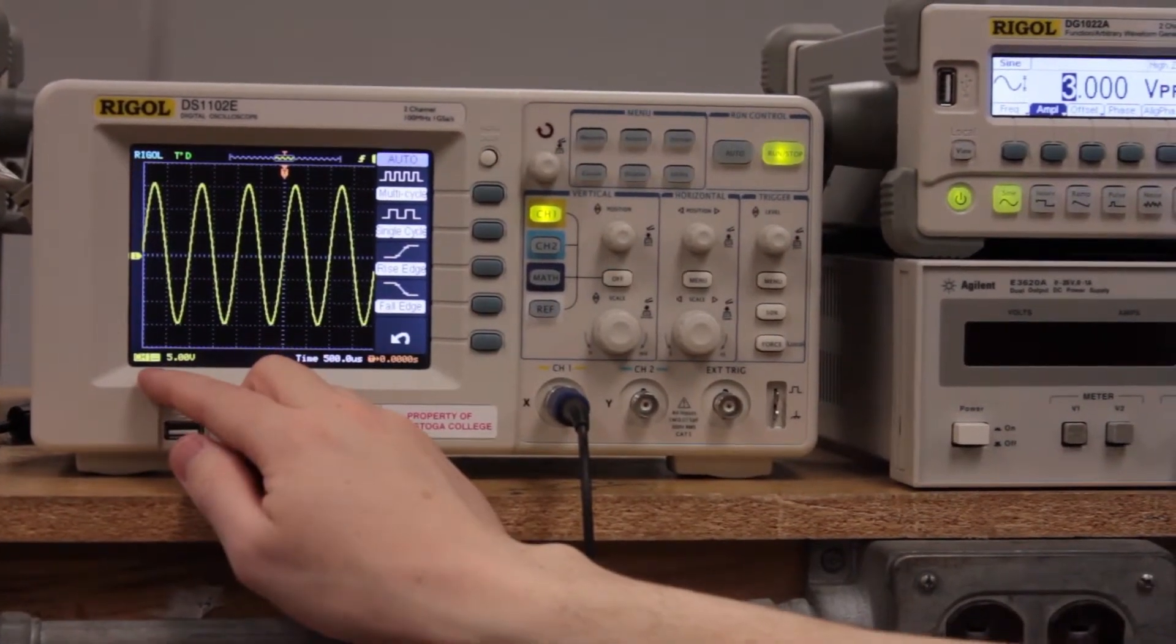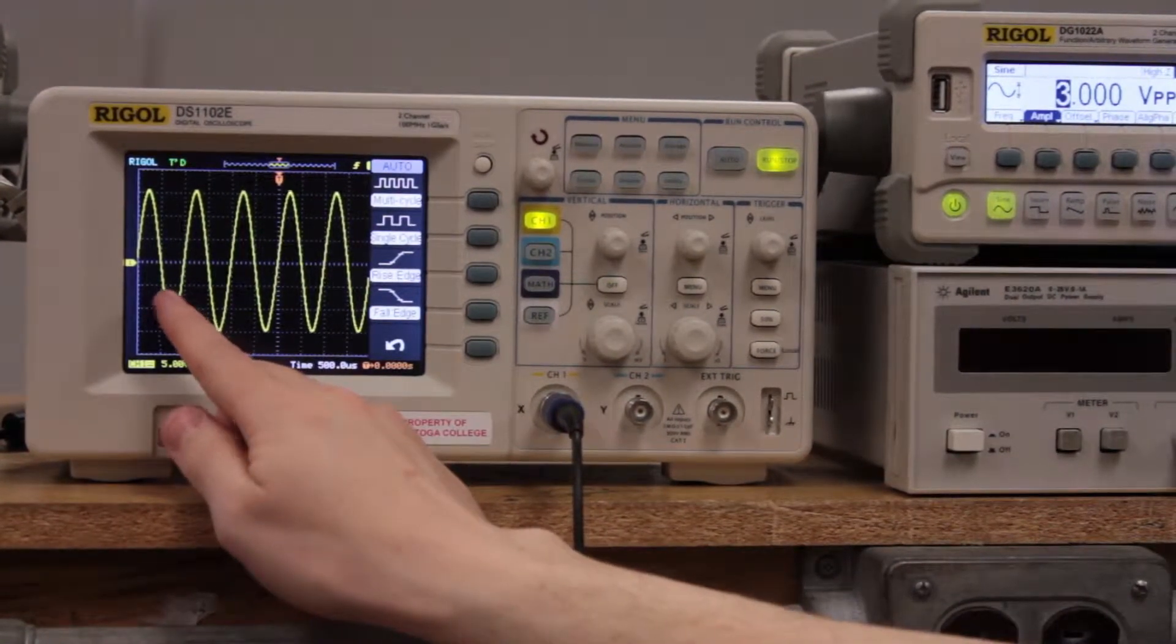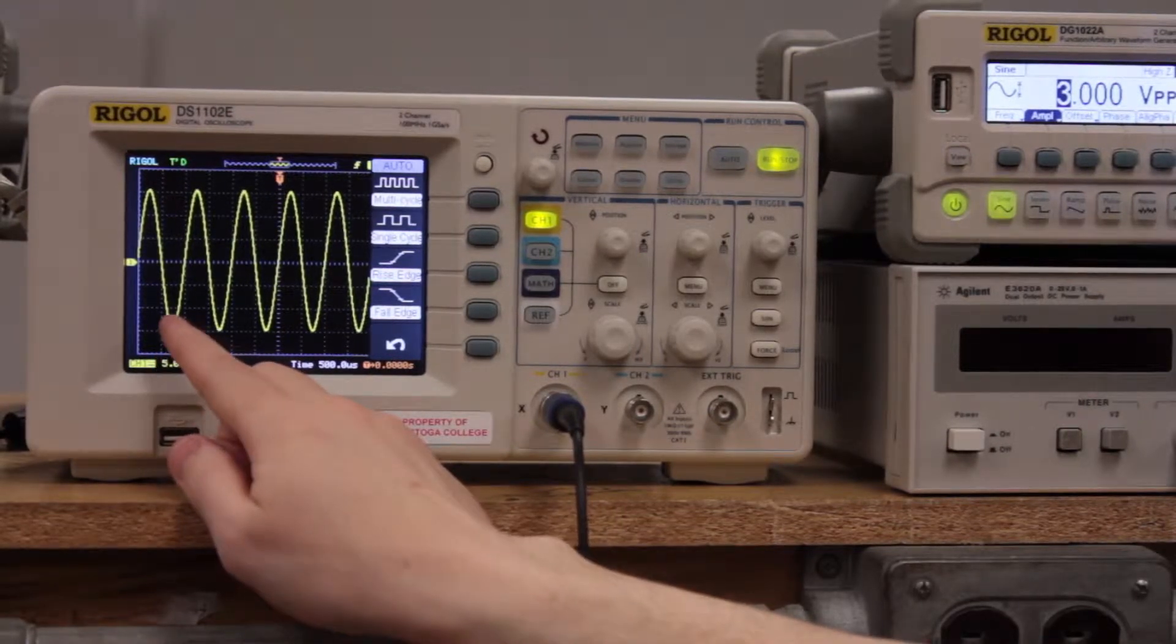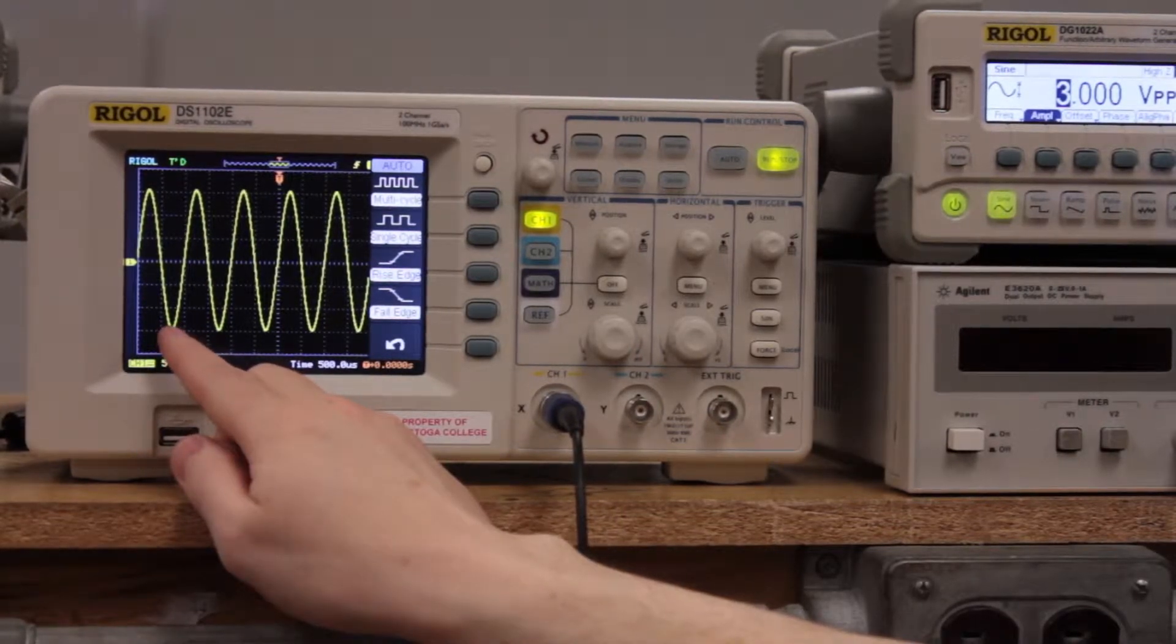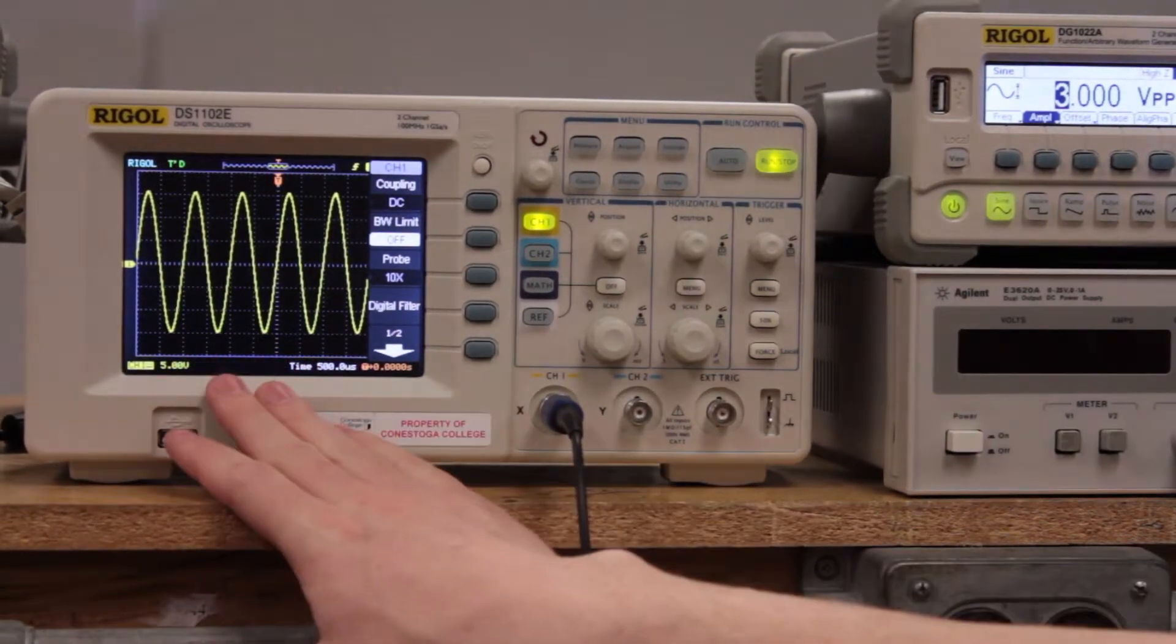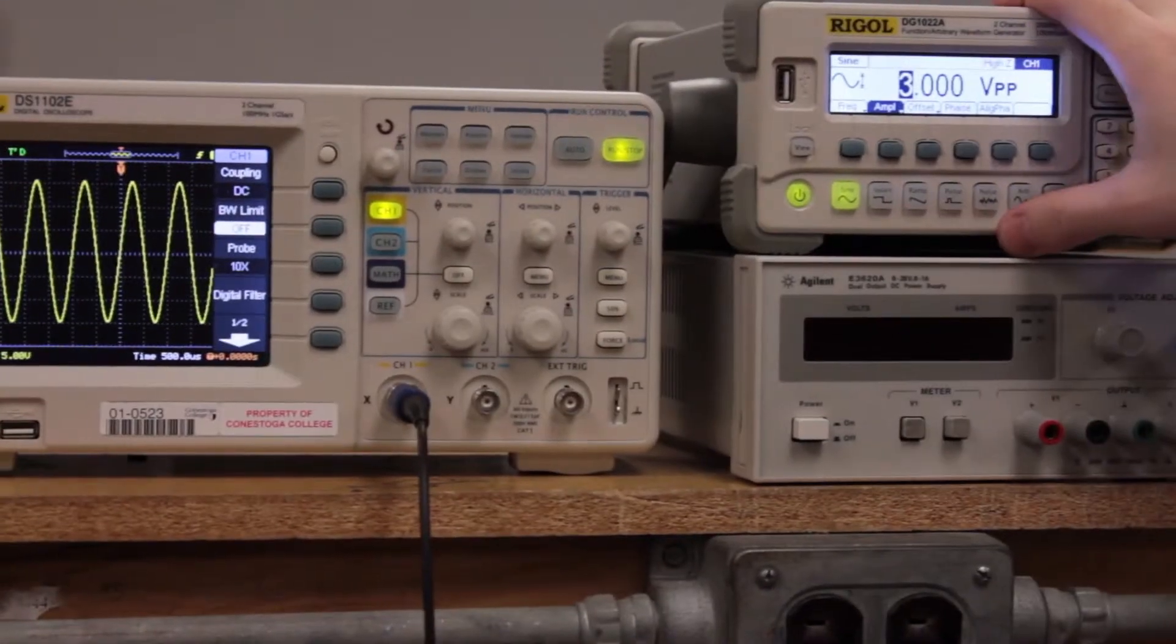From this we can see that we're getting what is according to the scope at least approximately equal to 15 volts down here. So why does it say 15 volts here when we're actually putting in 1.5 volts?